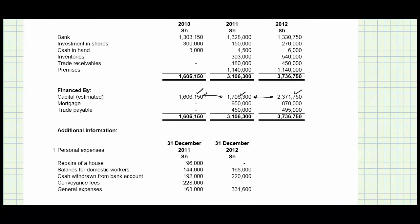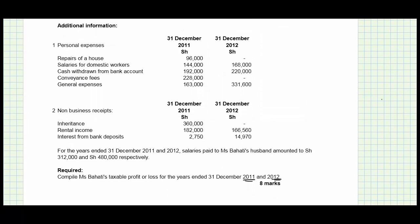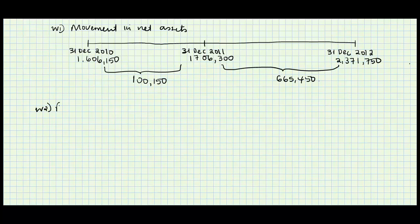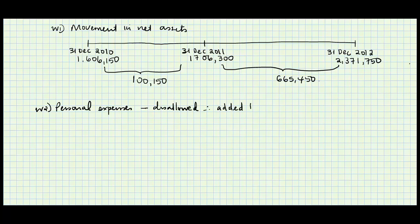After that, we go through the other notes and see what we have. The first thing we can notice here is personal expenses. Some personal expenses will be allowed and others may be disallowed. The amounts of 96,000, 144,000, 192,000, 228,000, and 163,000 have already been categorized as personal. So we cannot start determining whether a portion of them are business-related — we assume all of it is personal and add it back. This becomes working number two: personal expenses.